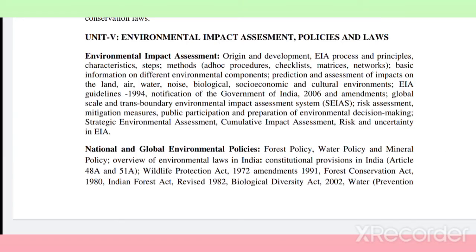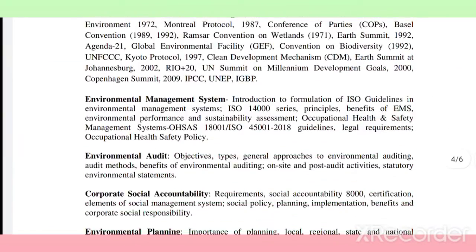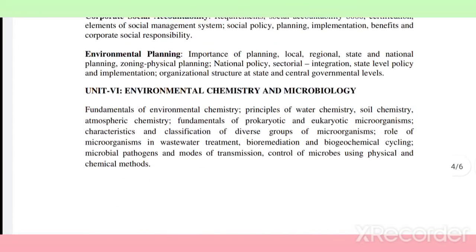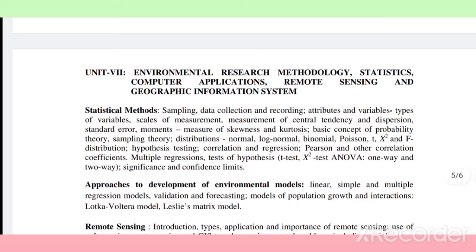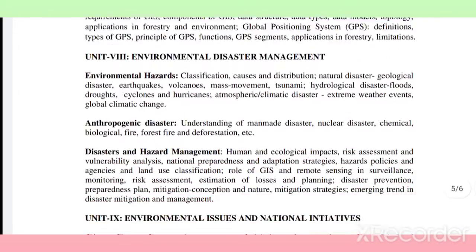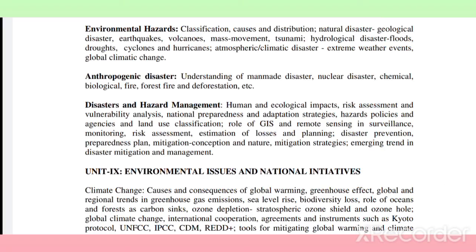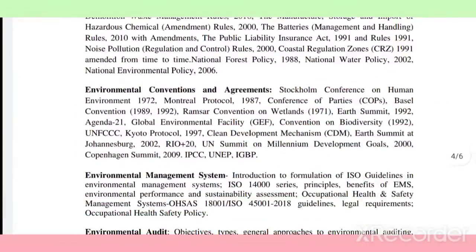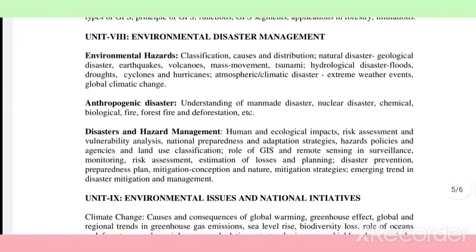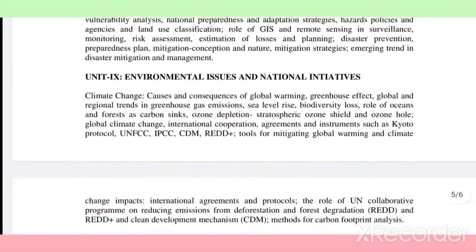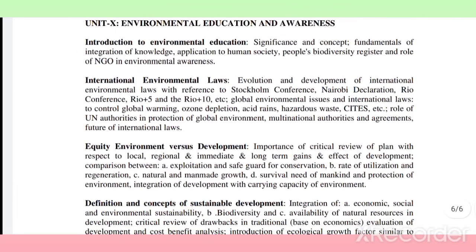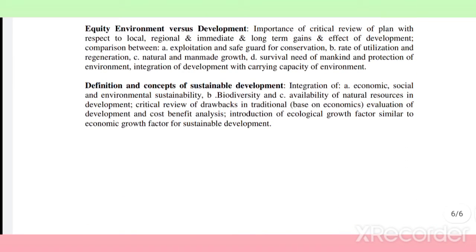Unit 6 deals with Environmental Chemistry and Microbiology. Unit 7 covers Environmental Research Methodology, Statistics, Computer Applications, Remote Sensing, and Geographic Information Systems. Unit 8 deals with Environmental Disaster Management. Unit 9 covers Environmental Issues and National Initiatives. Unit 10 deals with Environmental Education and Awareness. These are the 10 units to cover for the examination.